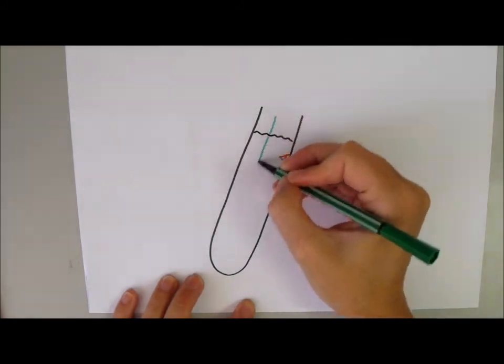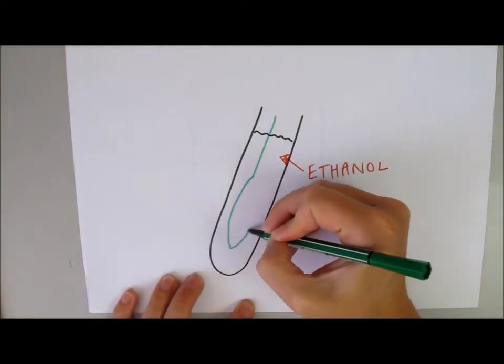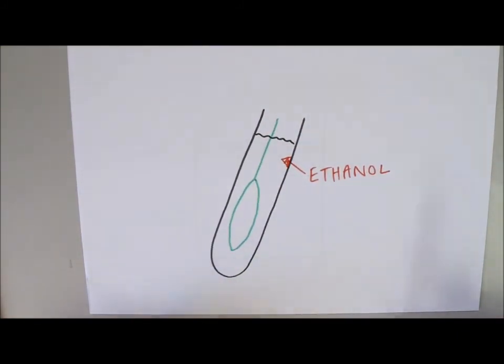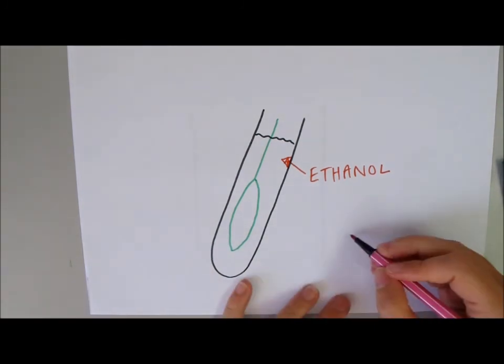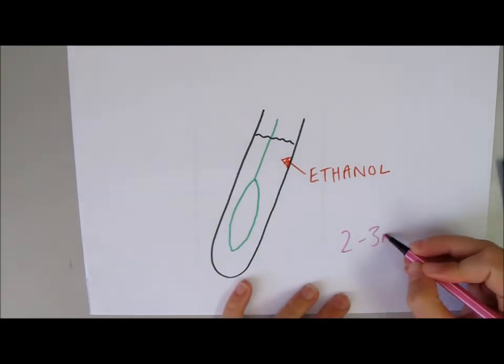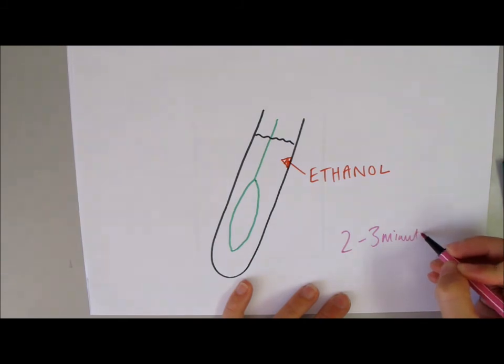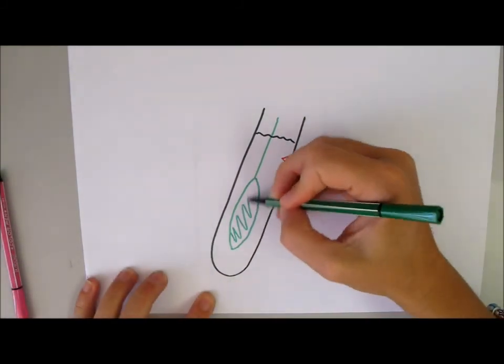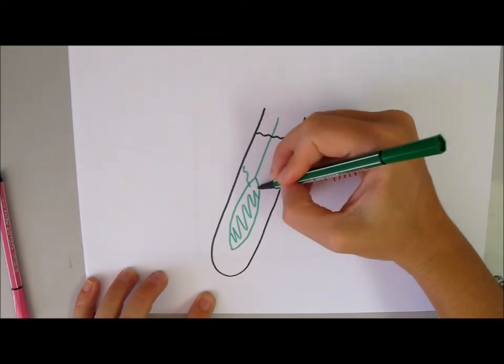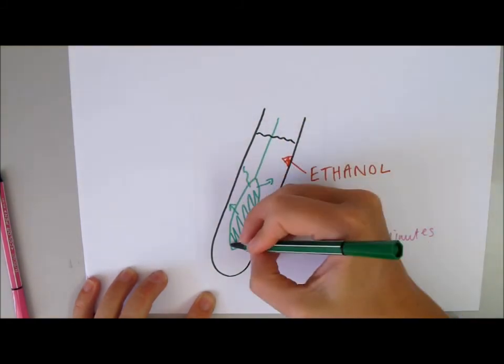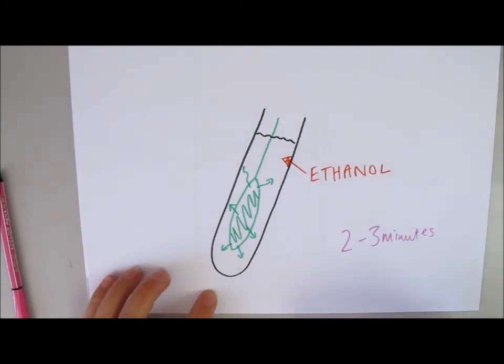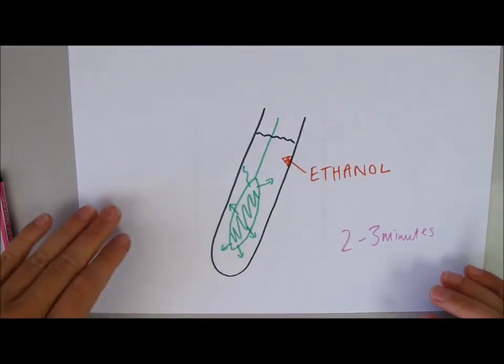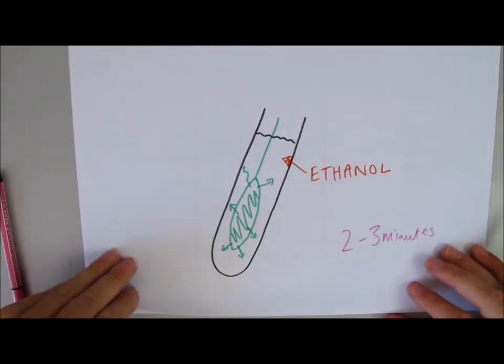Then, what you do is you put your leaf inside the ethanol and you're going to leave it in here for two to three minutes. And what you will see is that the green colour of the leaf starts to leave the leaf and enter the ethanol. So, you're going to end up with a green ethanol and a hopefully less green leaf.